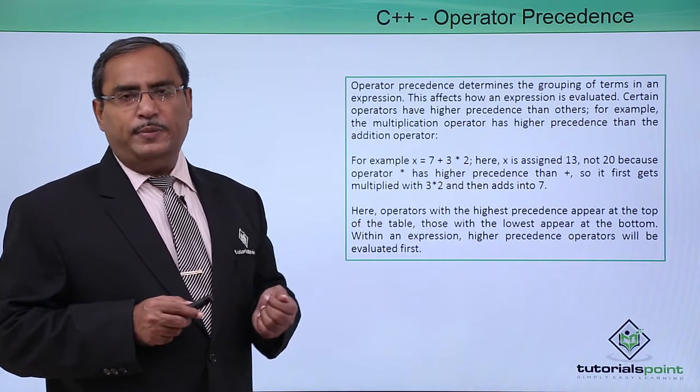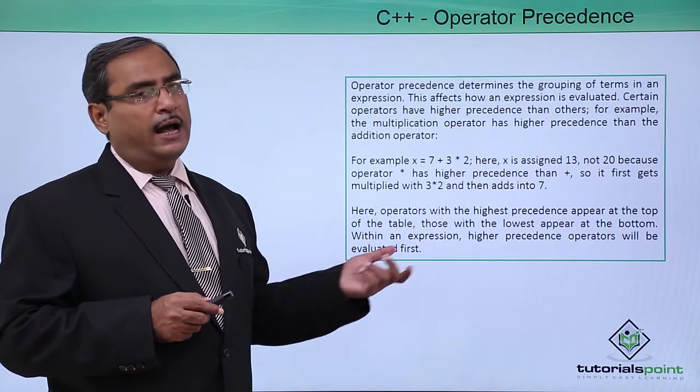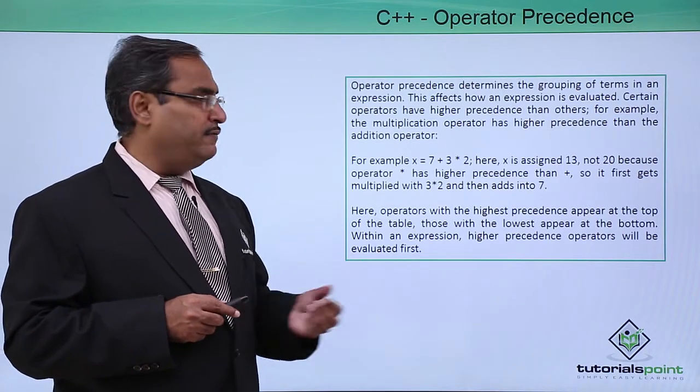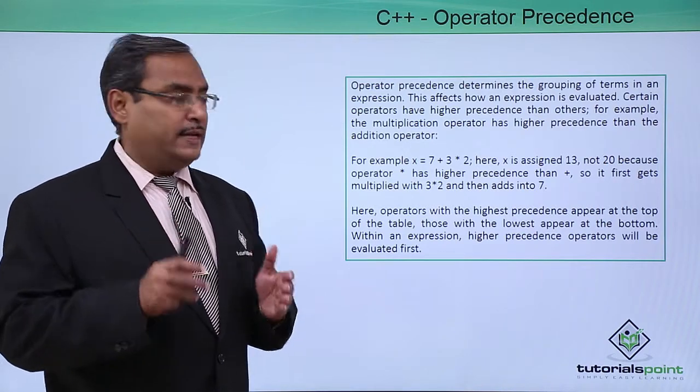3 into 2, 6 will be calculated first and then the 6 will be added with 7 and then 13 will be the resultant value and that will be assigned to x. That is operator precedence.